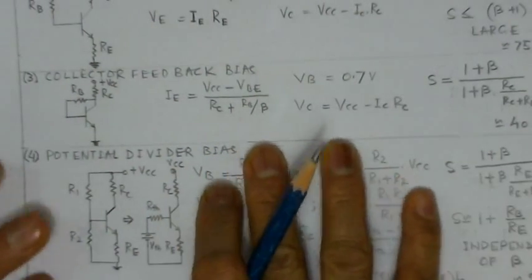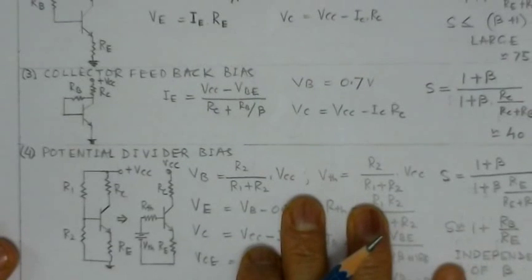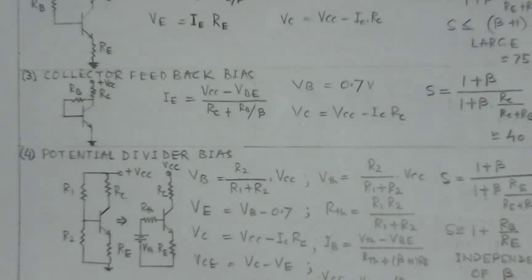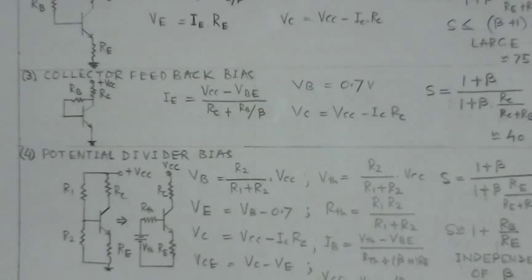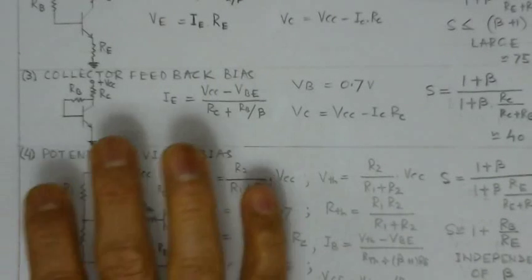In summary: midpoint biasing is done to allow the maximum AC output voltage. Of the various bias circuits, the potential divider bias is the best, leading to a beta-independent bias circuit. The name voltage divider comes from R1 and R2 forming a potential divider; other names are self-bias or universal bias. The ideal stabilization factor is 1, but a typical value around 10 is considered very good for practical bias arrangements.